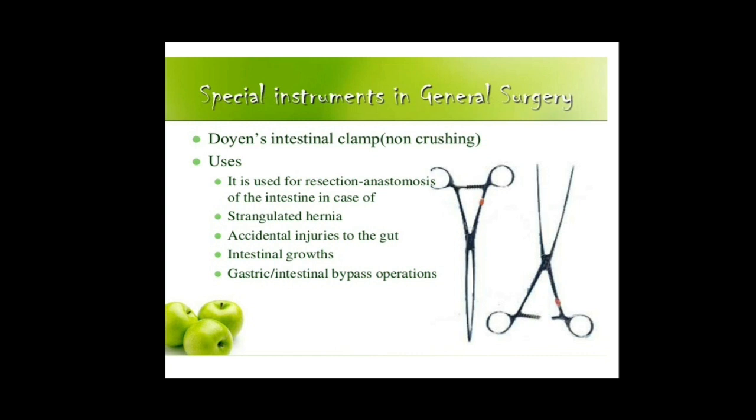The next one is the Lister sinus forceps. This is another type of forceps used for incision and drainage of abscesses. While cleaning the abscess, this Lister sinus forceps can be used to clean the wound by holding a swab through the forceps, and also to drain out any kind of abscess through tubes by holding the forceps. The next special instrument is the Doyen intestinal clamp, which is another kind of forceps mainly used for gastrointestinal tract surgeries.